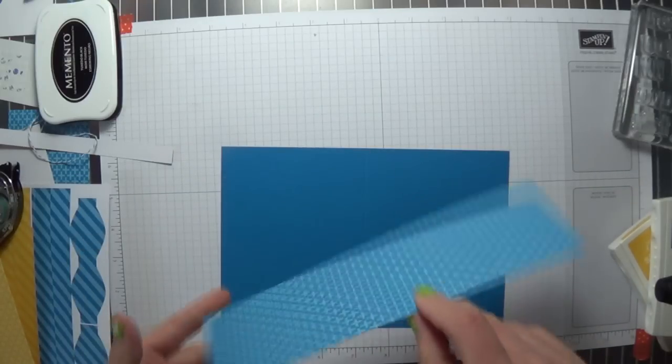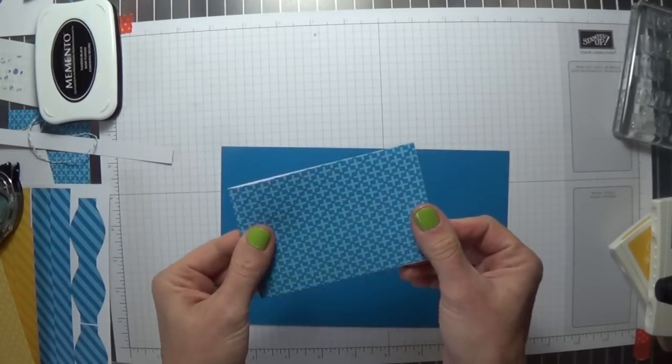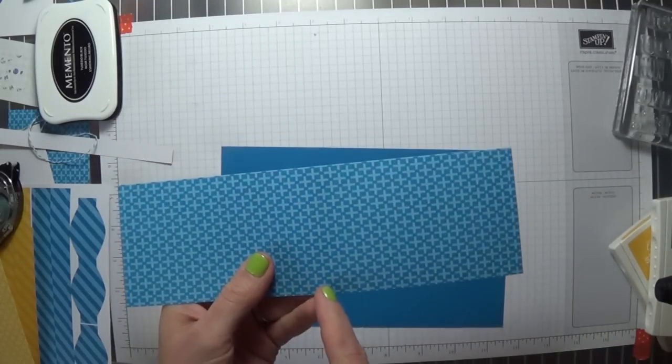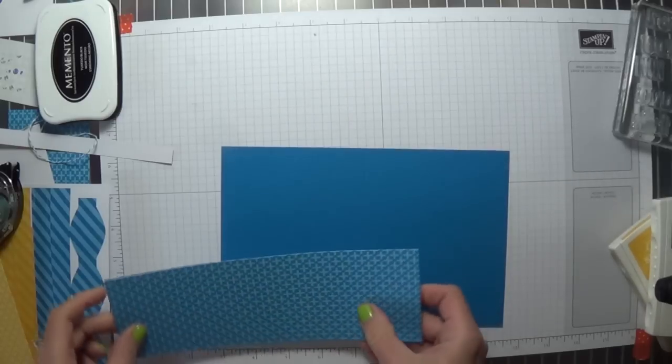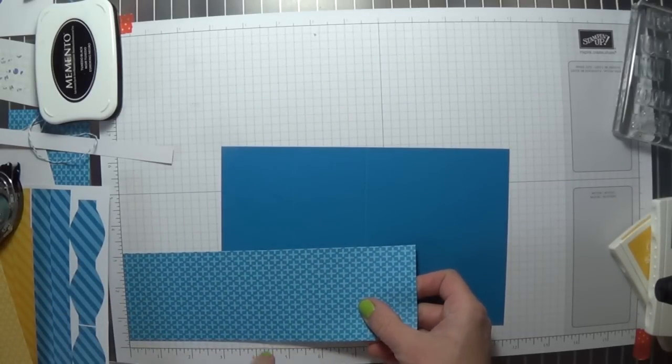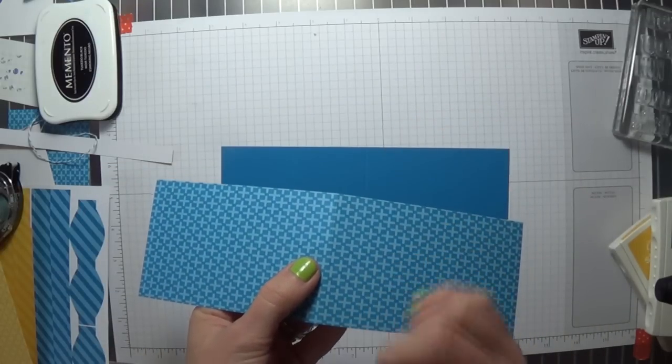The next step is to take one of your cards. These came in your Paper Pumpkin Kit and we're just going to cut it right here along this score line. It ends up being a little bit under four and a half but what I did is I just lined it up on my paper trimmer and just cut through the middle.